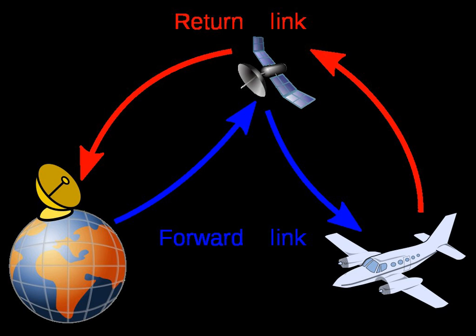Located at a specified fixed point on land to provide a feeder link for the Aeronautical Mobile Satellite Service. Each station shall be classified by the service in which it operates permanently or temporarily.